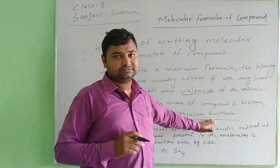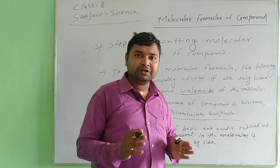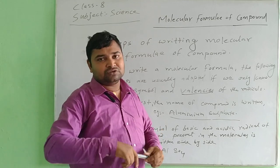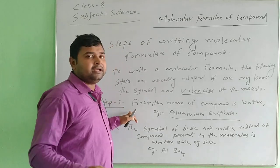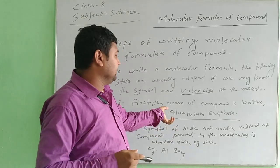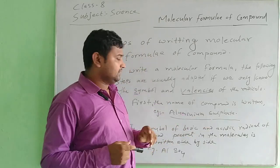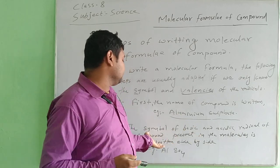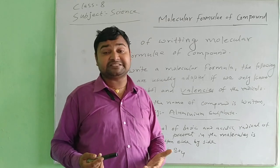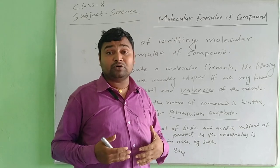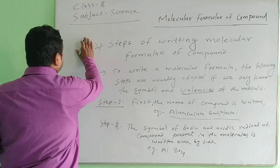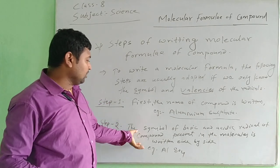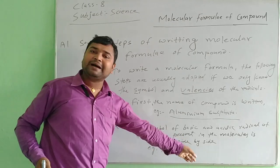Step number two: write the symbols of the basic and acidic radicals of the compound, represented in the molecule side by side. For ammonium sulfate, we write NH4 and SO4 separately, side by side. We write how many radicals of the compound are present in the molecule.